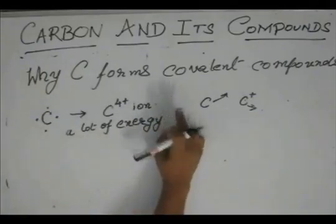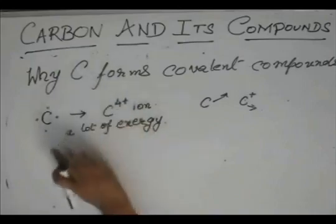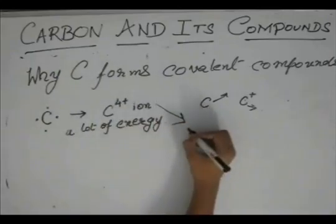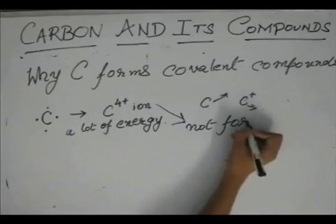It does not want to give that electron. So it needs a lot of energy to take out four electrons consecutively from this carbon to form this C4+ ion. So C4+ ion is generally not formed.